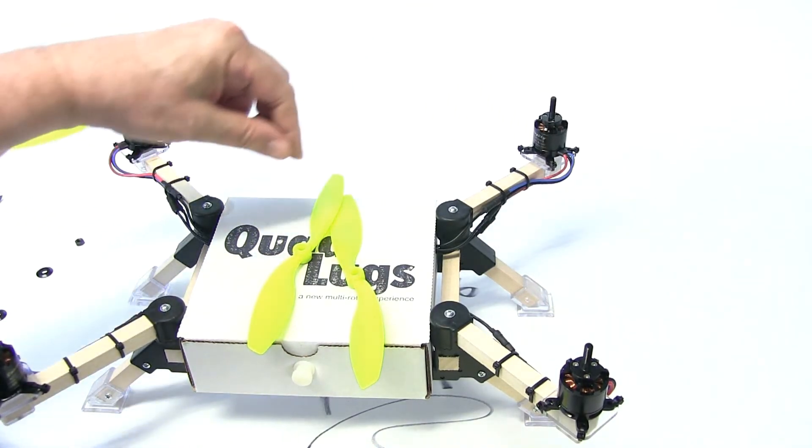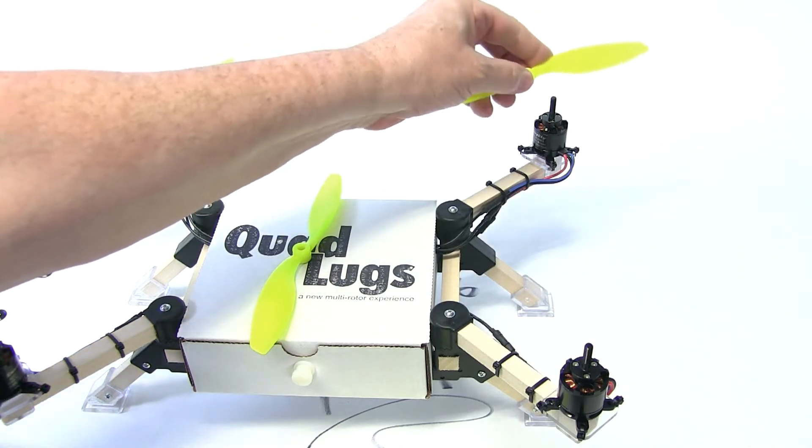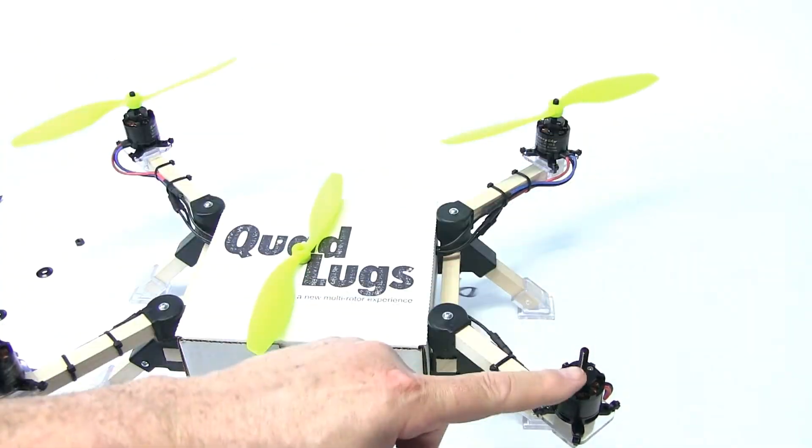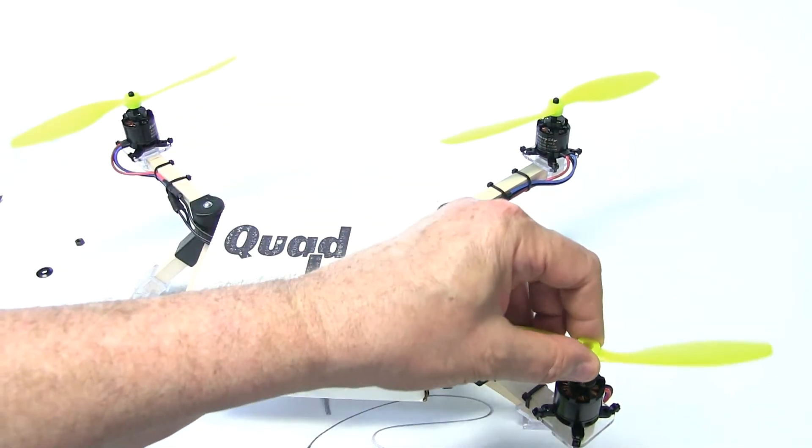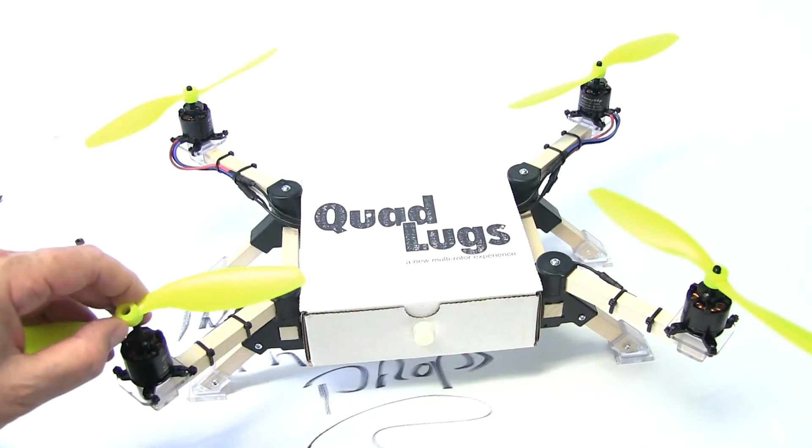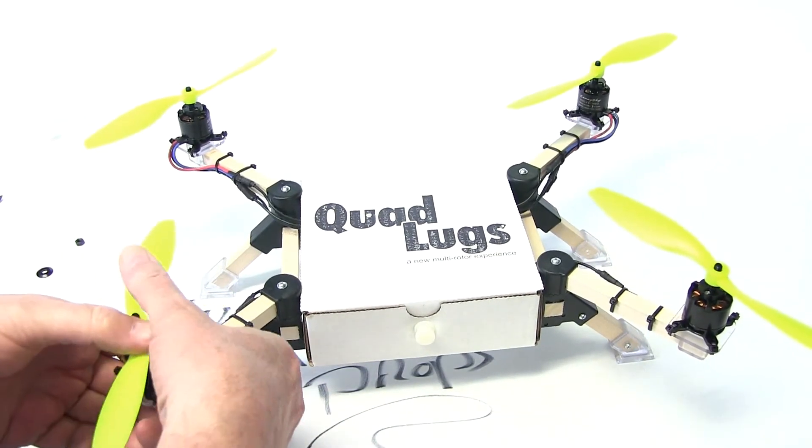This is motor number two and it will go counterclockwise, and this says L. Motor number three will be clockwise. Motor number four will be counterclockwise, and now you have them on.